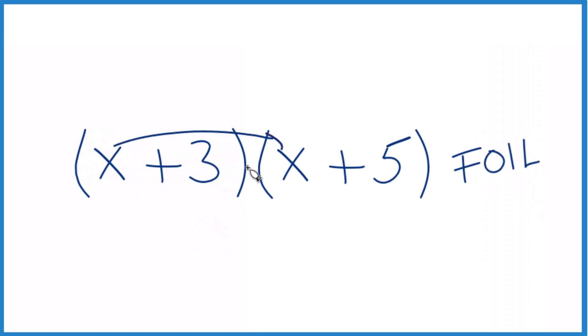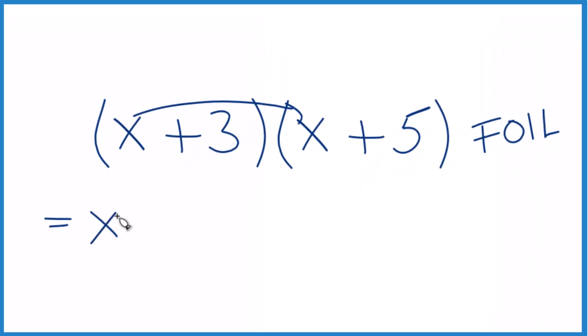So we take the first term, x times x, that equals x squared. We take the outside, x times 5, that's our 5x.